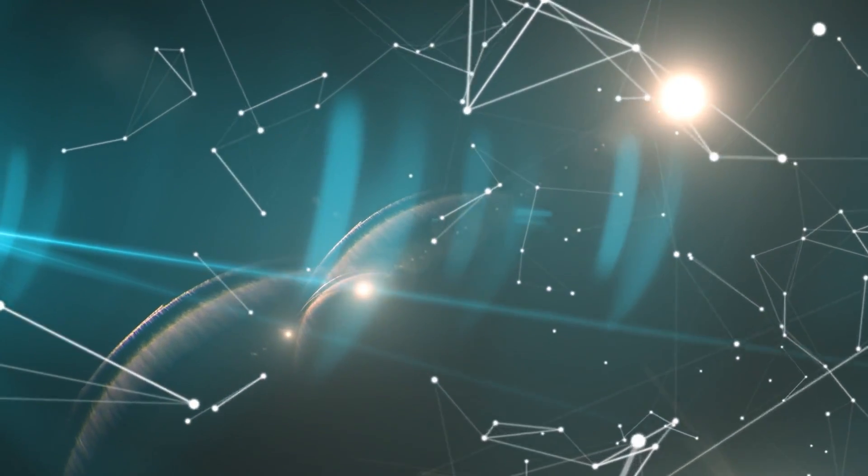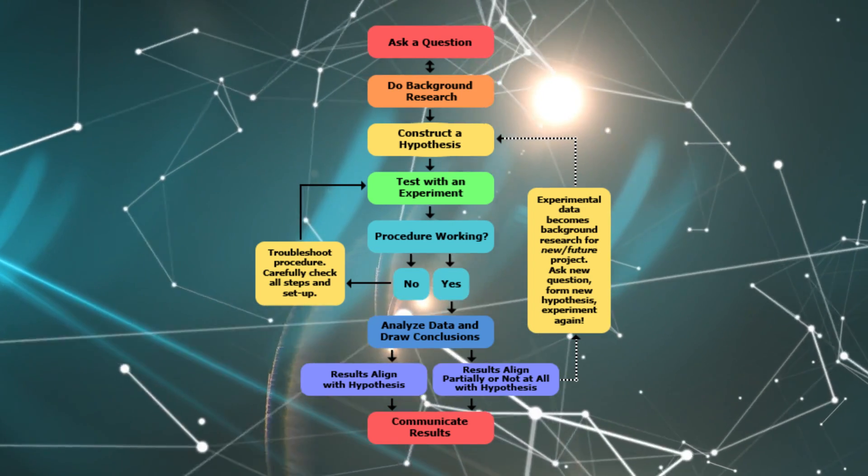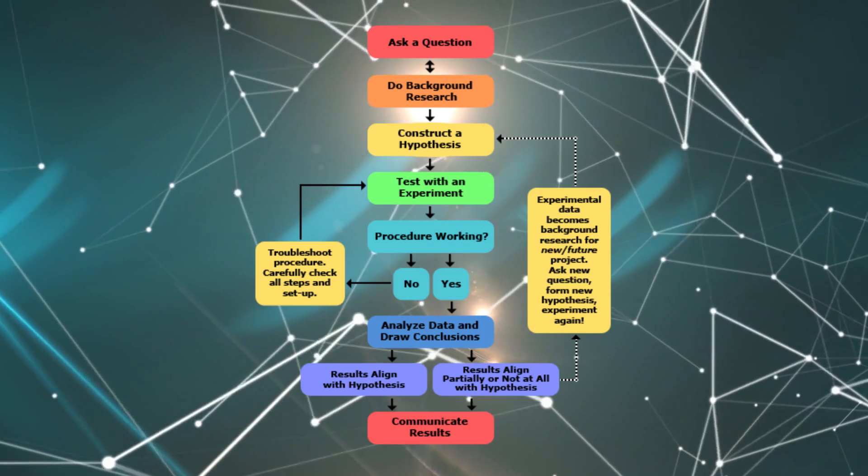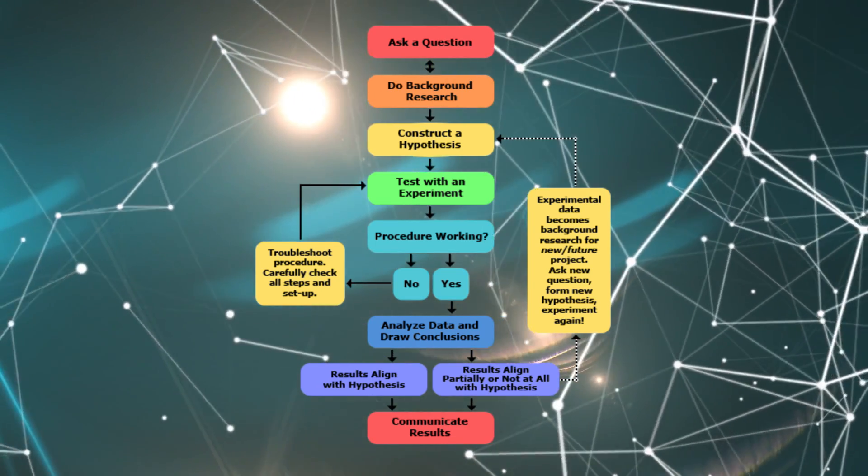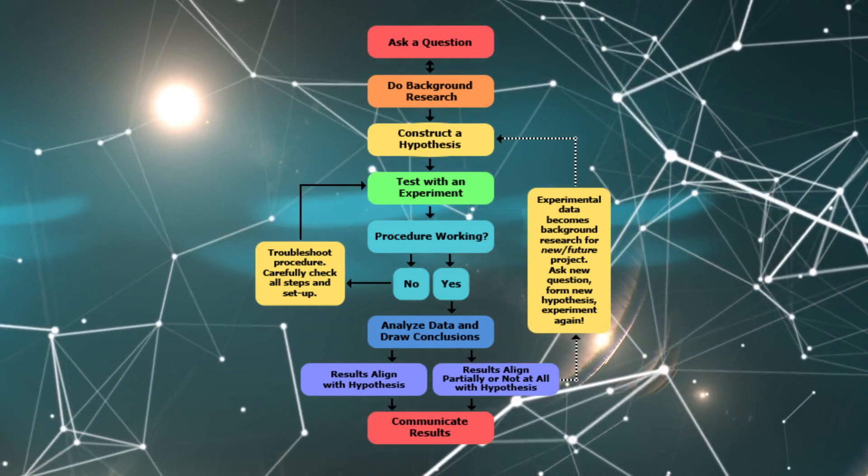The basis of the scientific method is asking a question, forming a testable hypothesis, gathering empirical data, and evaluating the findings. The scientists opposed to the study of multiverse theory suggest that this testability is the key issue. How can any experiment rule out a theory if the theory provides for all possible outcomes?